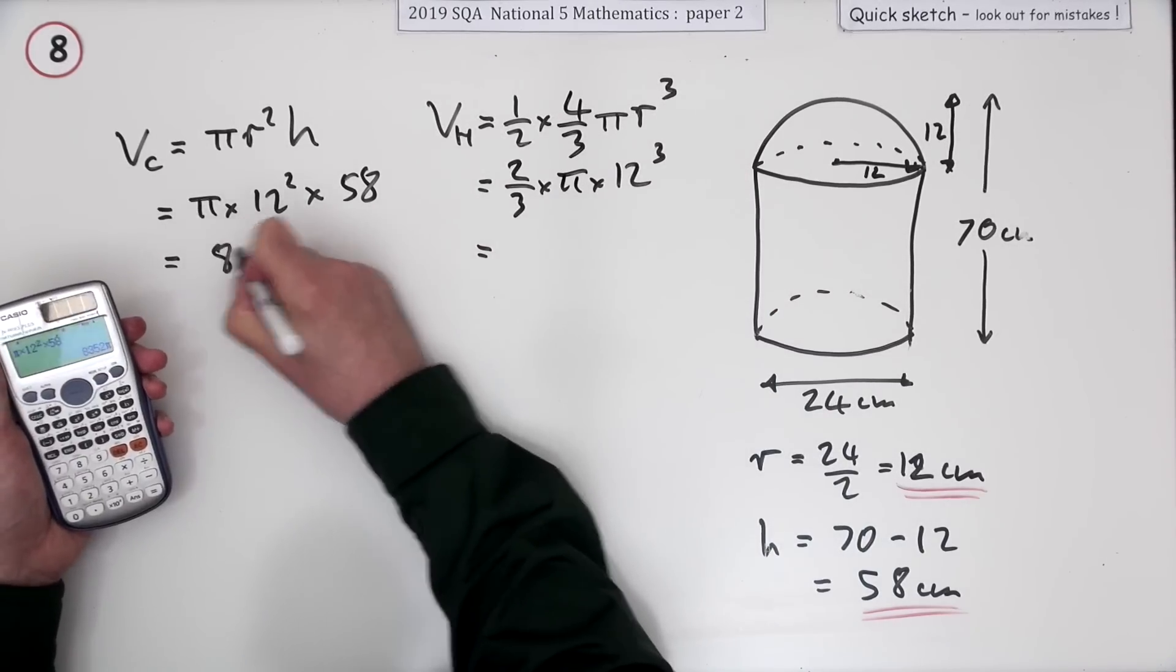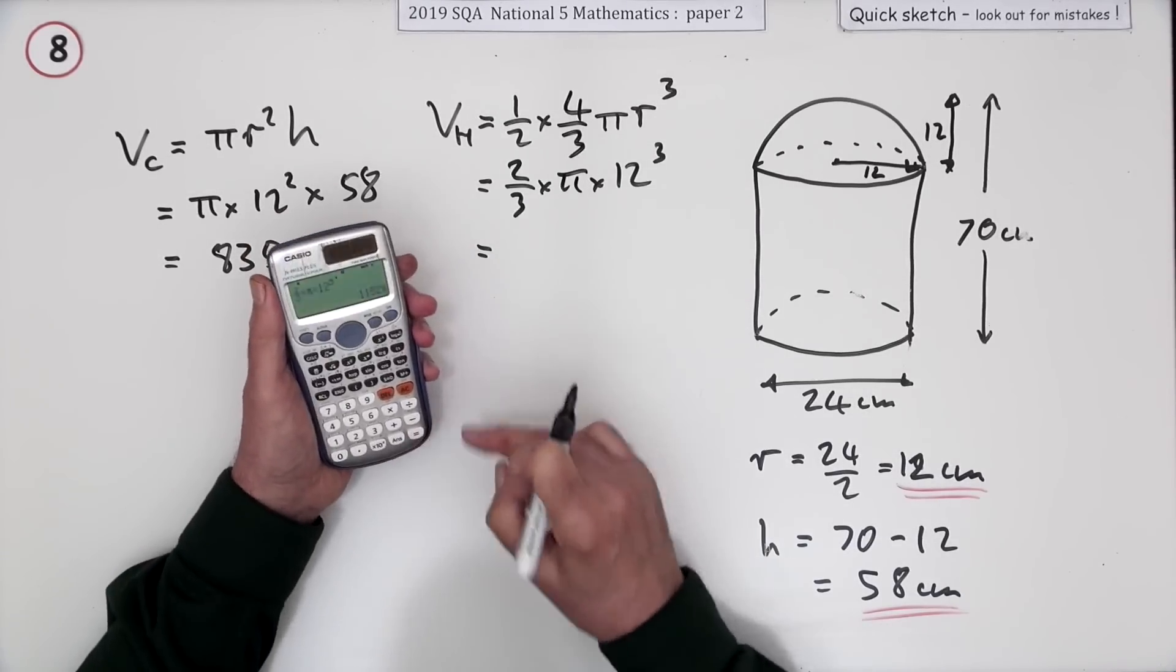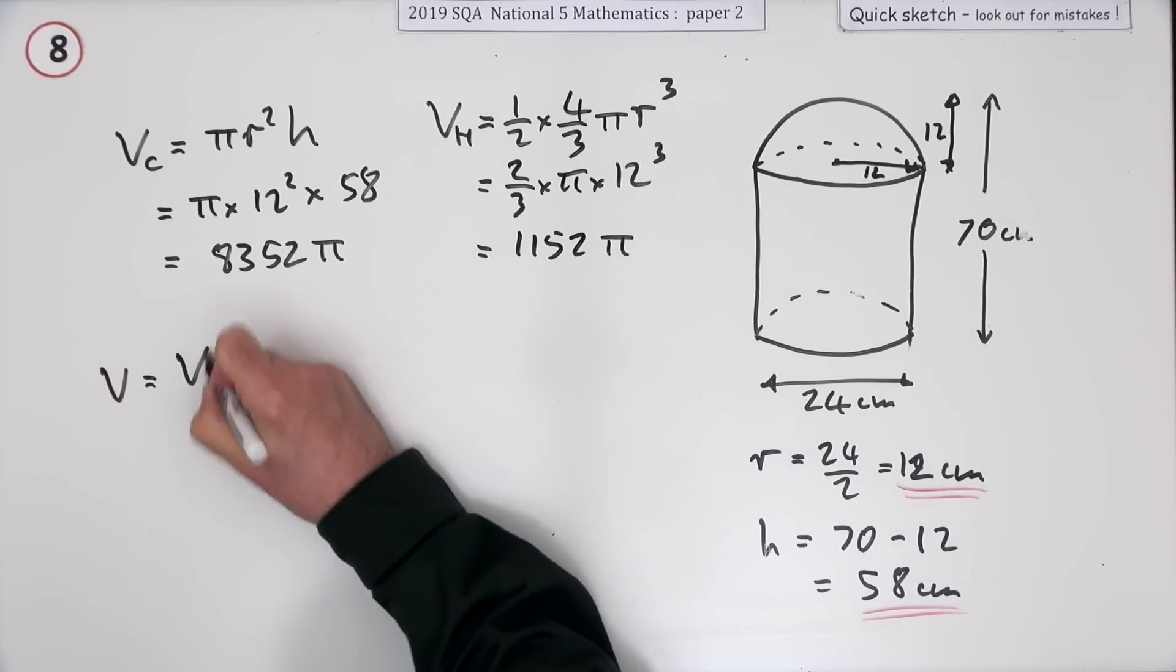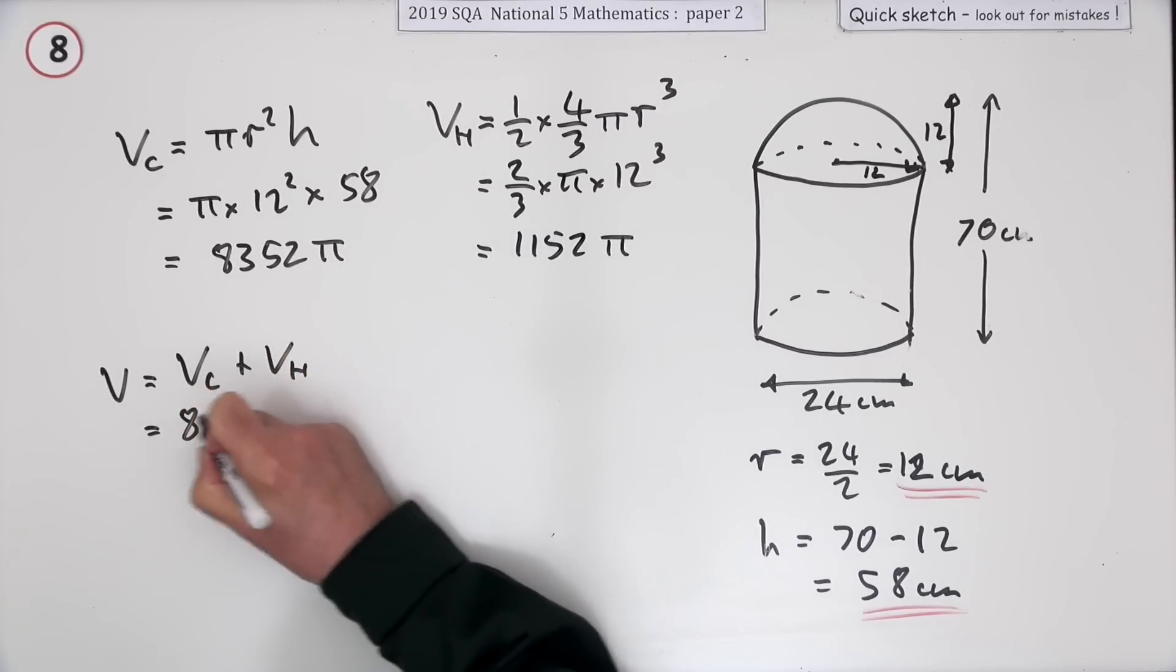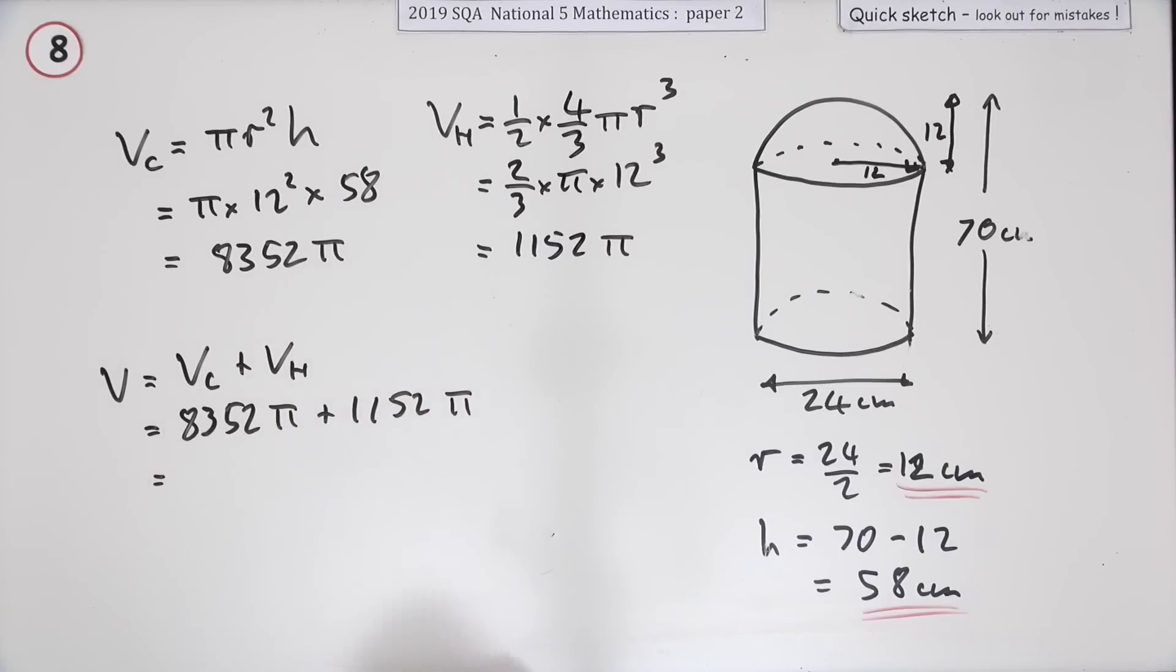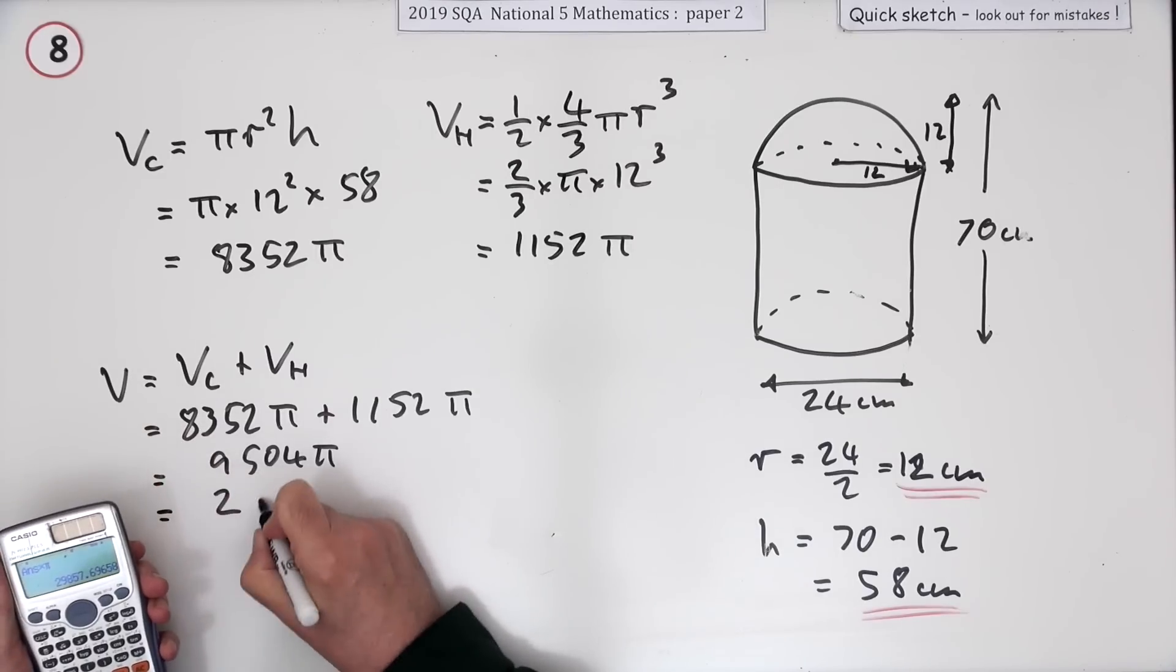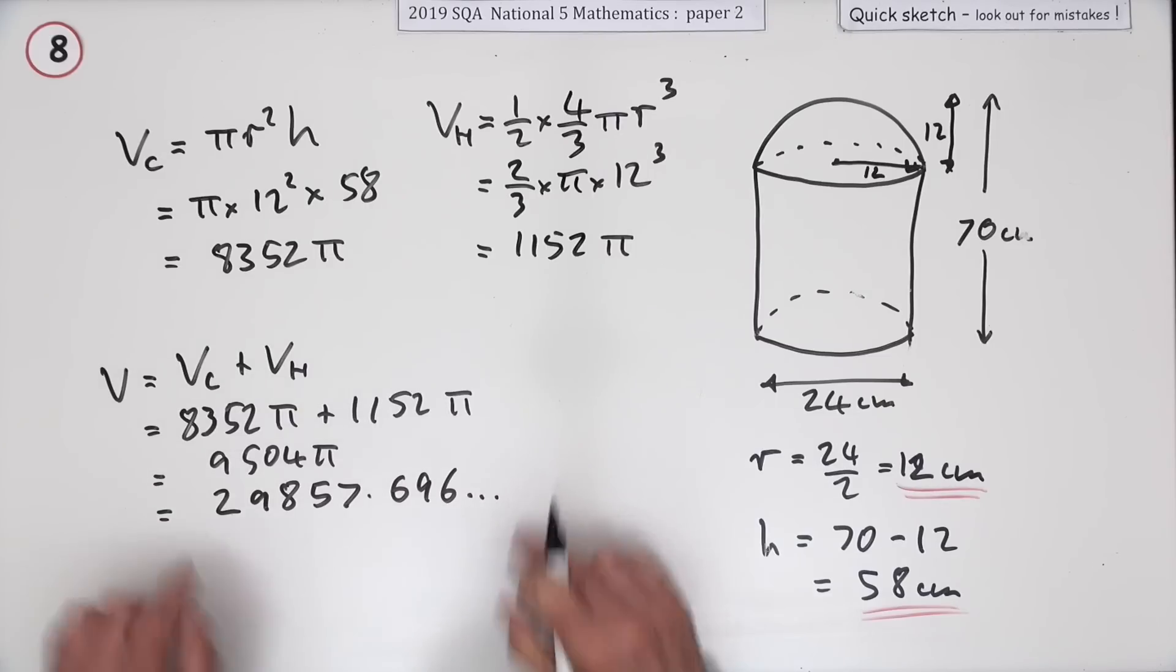I'll put both of those into the calculator. The calculator will give me the answer with pi still in it, which is actually quite handy. And the other one, same again, 1152 pi. I'm going to leave a space and put the other answers in. But that means the total volume will be the sum of the two of them. So it's going to be 8352 pi plus 1152 pi, which would be 9504 pi, and then I'll change it, change that into 29857.696 and so on, being the exact answer.